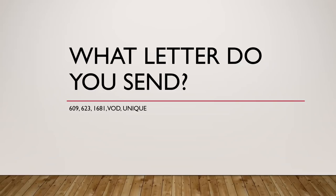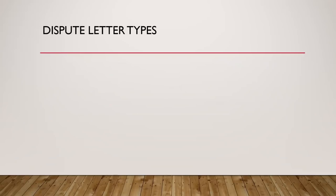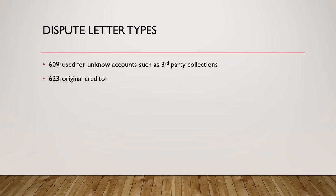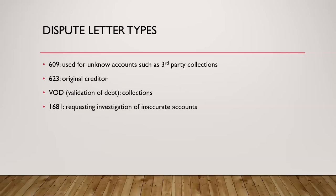So we're looking at 609, 623, 1681, VOD, and unique disputes. Here are your dispute letter types: 609 is used for unknown accounts such as third-party collections; the 623 is to an original creditor; the VOD, which is validation of debt, is for collections; and 1681 is for requesting investigation of inaccurate accounts.